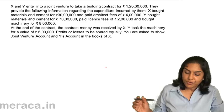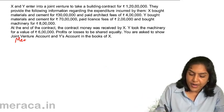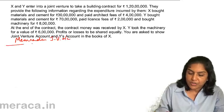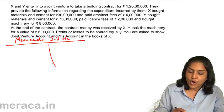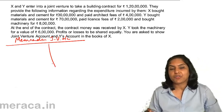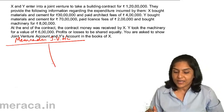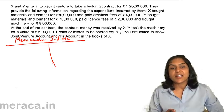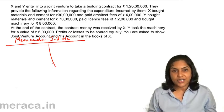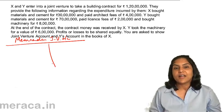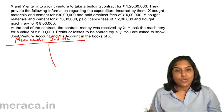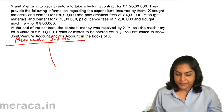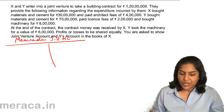X would have to prepare a memorandum joint venture account, which would put all expenses — irrespective of whether X incurred or Y incurred — on the left-hand side. I am not saying debit side because strictly it is not an account. It does not really have a debit or credit. There is no double entry, no corresponding double entry will be there.